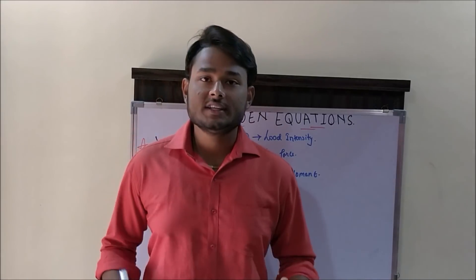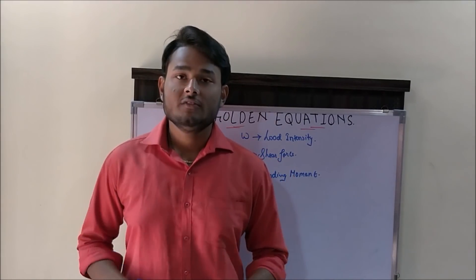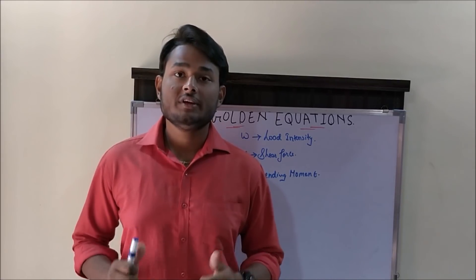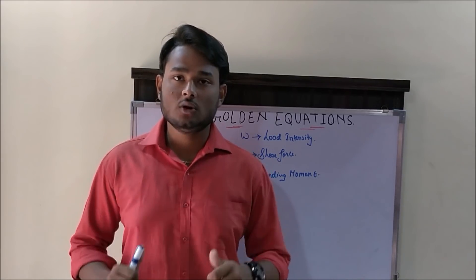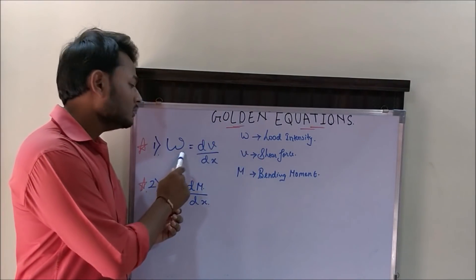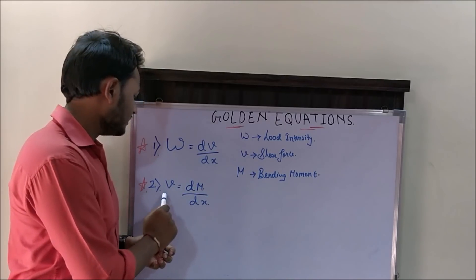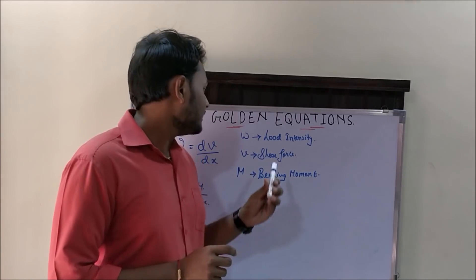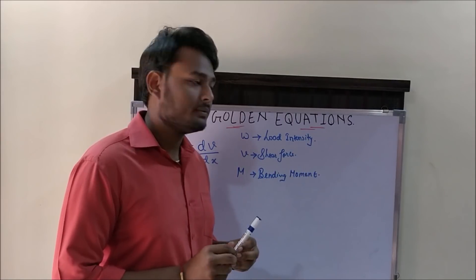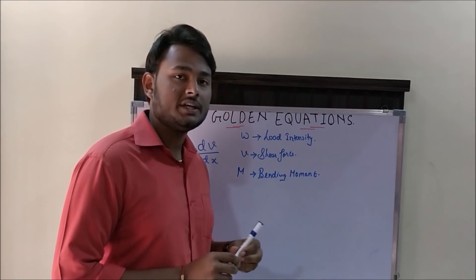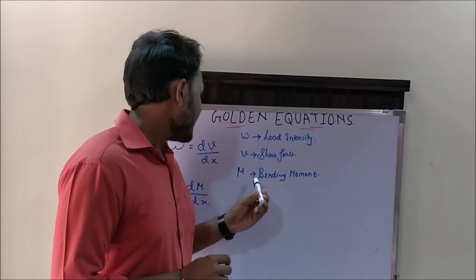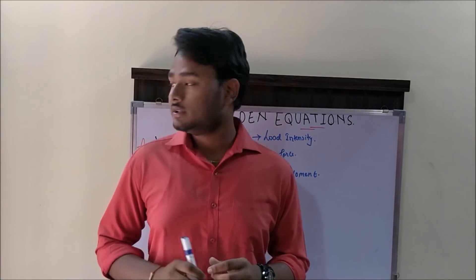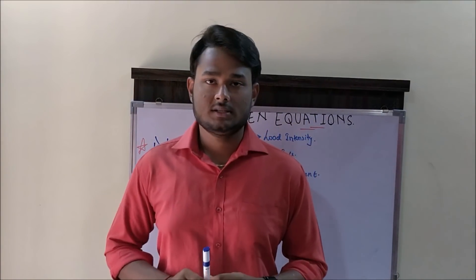In order to understand the shear force and bending moment diagrams correctly, we just need to memorize two basic equations. These golden equations are: W = dV/dx and V = dM/dx, where W is the load intensity measured in kN per meter, V is the shear force measured in kN, and M is the bending moment measured in kN·m. We will learn more about these equations when we consider the examples.